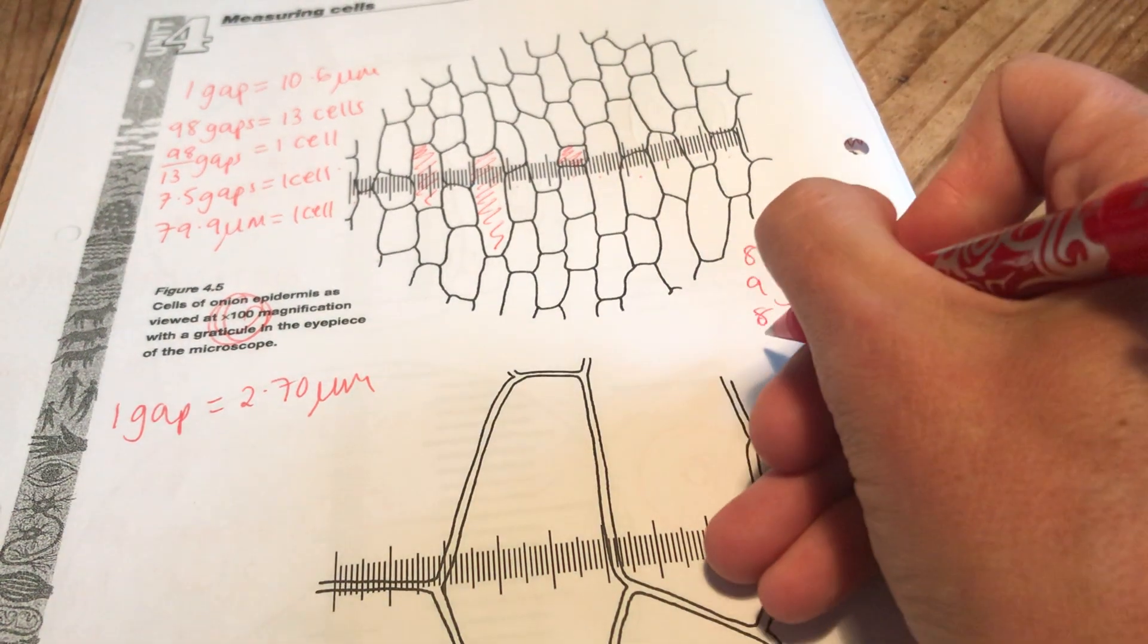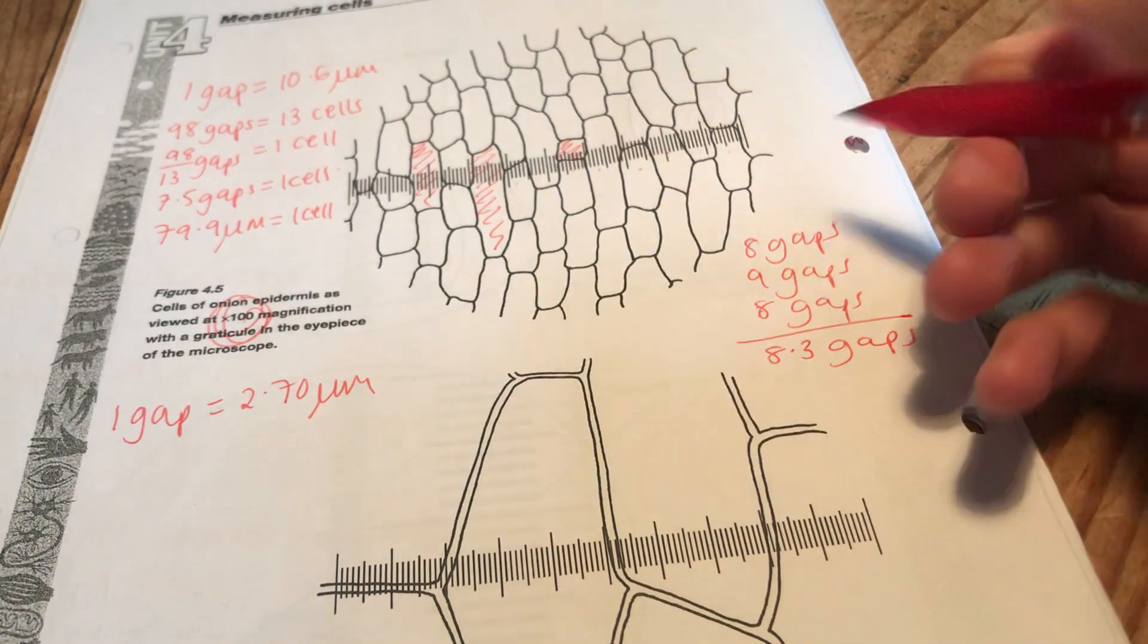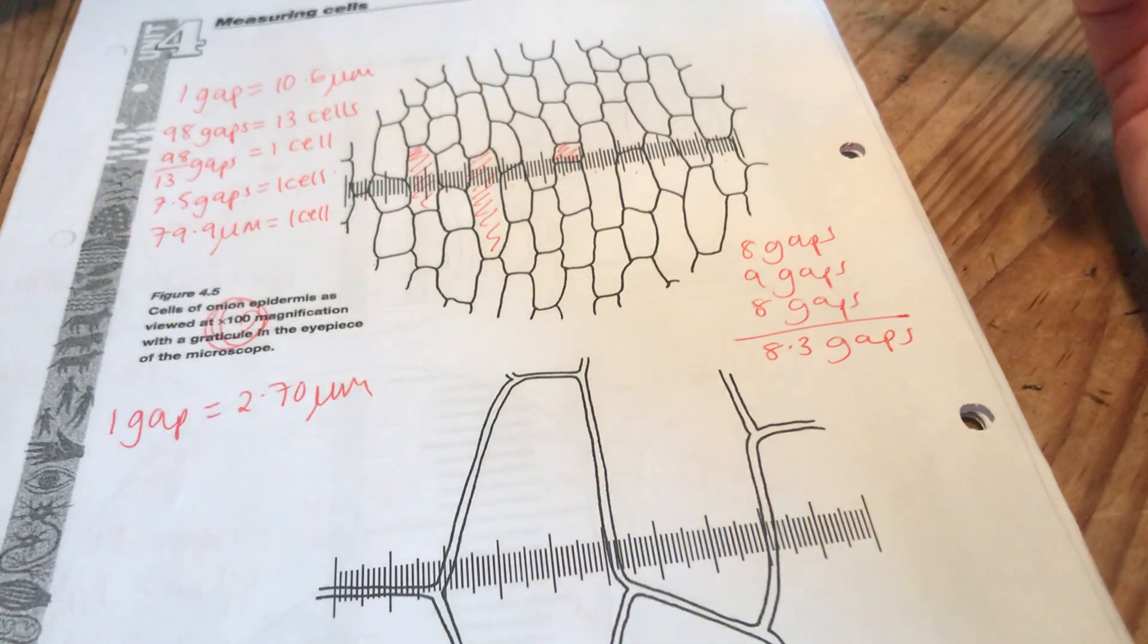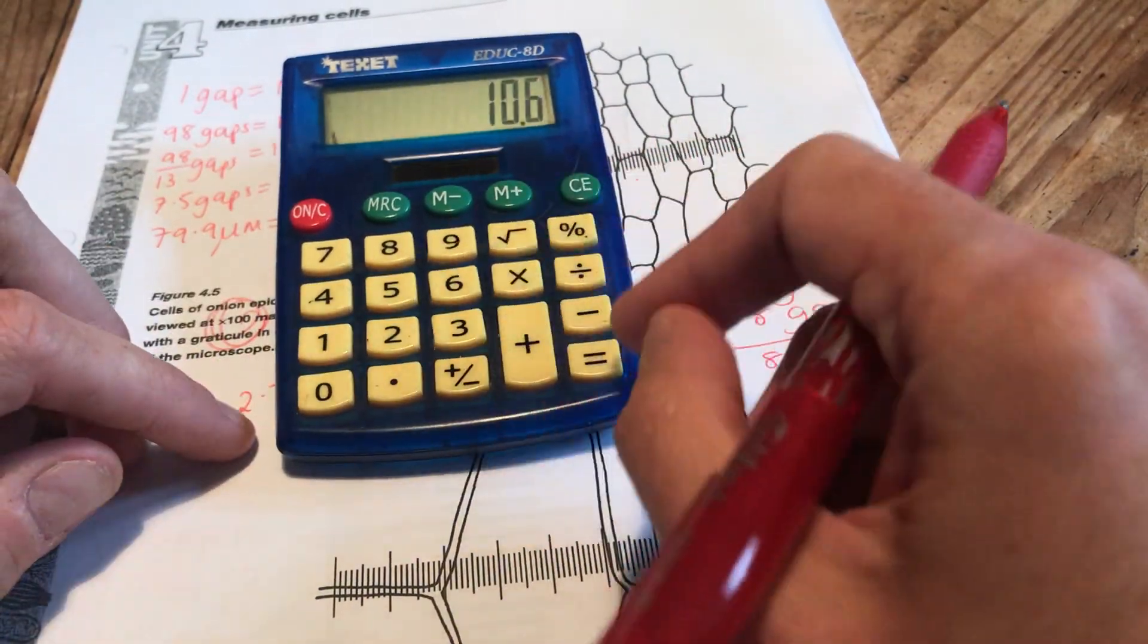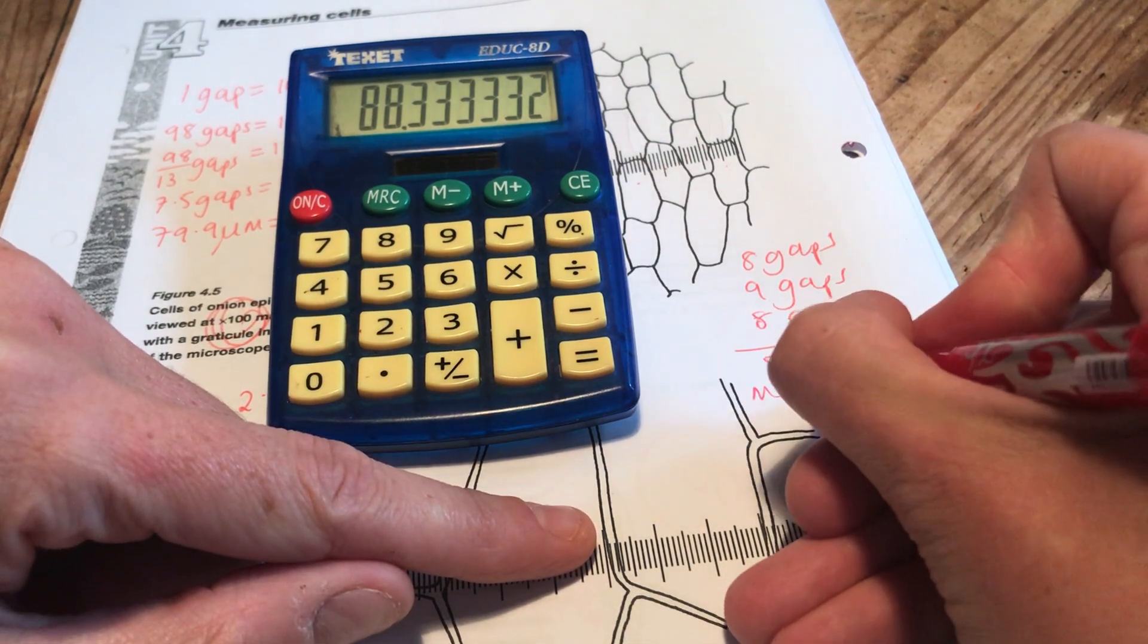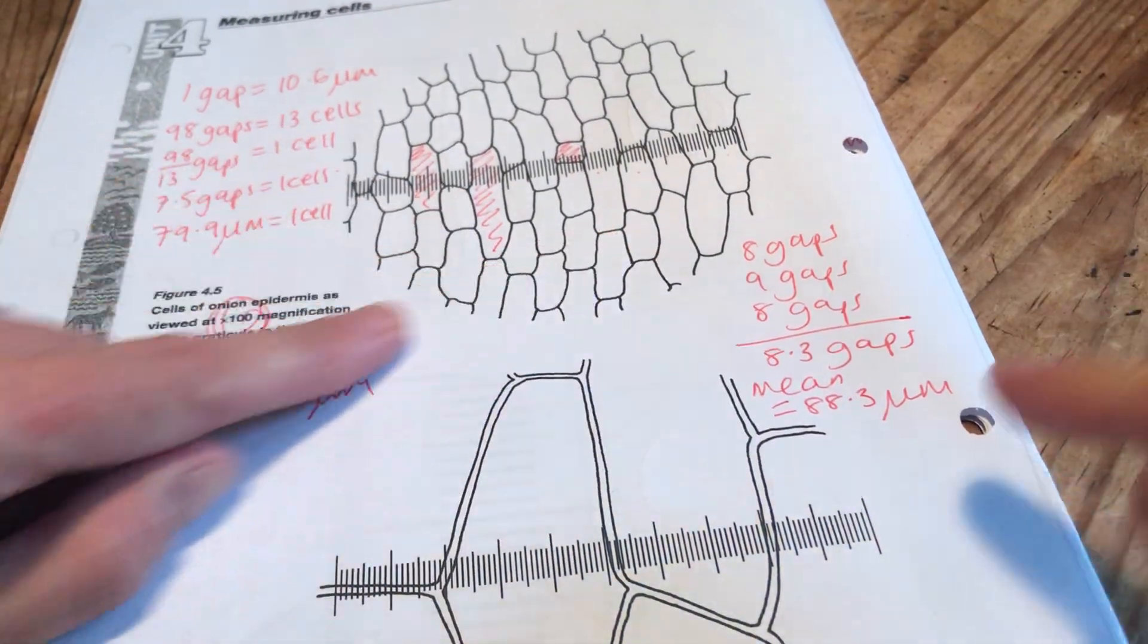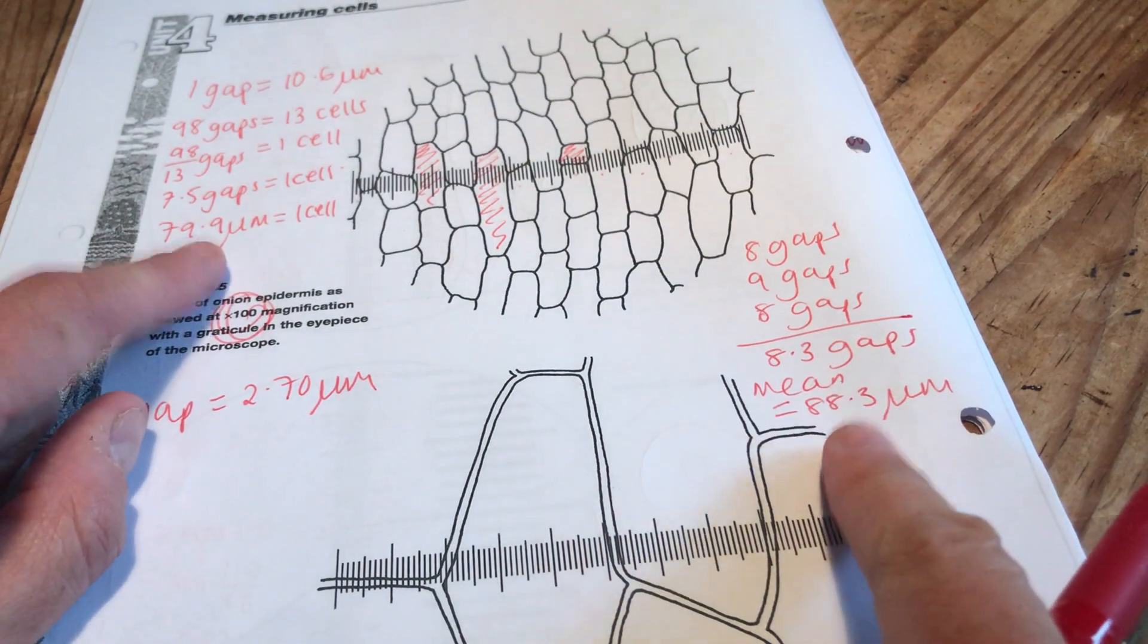Of course, my goodness, I can't believe I've got a calculator to do that. So I might say that the mean cell here is 8.3 gaps. I know that each gap is worth 10.6. So let's times this by 10.6. So I'm saying the mean is 88.3 micrometers. I'm still on the top diagram here. That's not a million miles out, is it? Two similar methods.